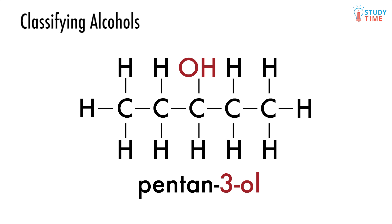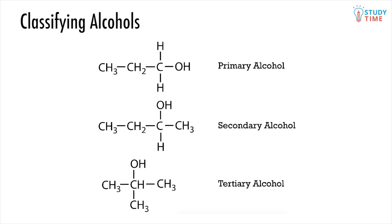The tricky thing about alcohols is that they have a further method of classification, which can affect the way they react. We will refer to the carbon the hydroxyl group is bonded to as the hydroxyl carbon. If the hydroxyl carbon is bonded to one other carbon, we have a primary alcohol. If it's two, we've got a secondary, and three carbon-to-carbon bonds means we have a tertiary alcohol.